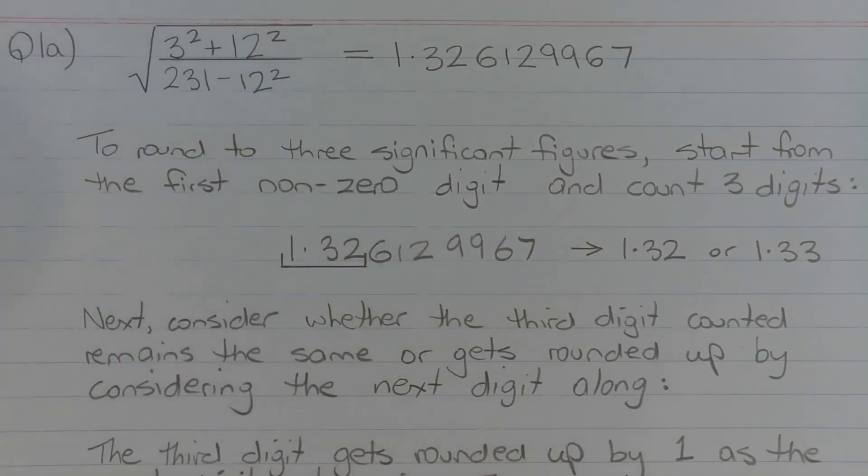Evaluate the square root using the calculator and write the full decimal answer. So the square root of 3 squared plus 12 squared over 231 minus 12 squared is equal to 1.326129967.